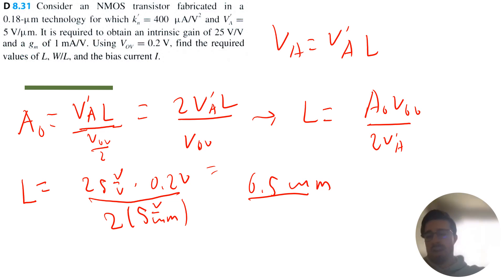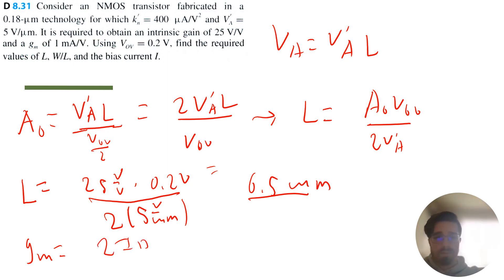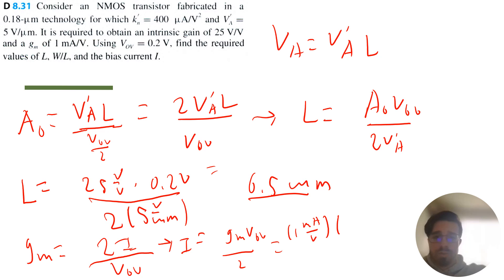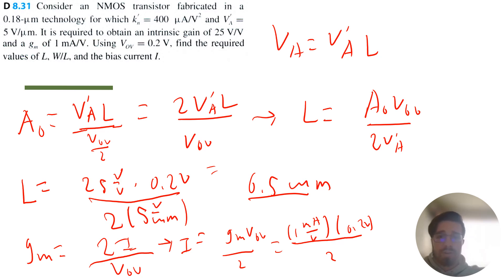Now we know gm equals 1 milliamp per volt, and we can also write gm equals 2 times the bias current I divided by V overdrive. Solving for I gives I equals gm times V overdrive divided by 2, which is 1 milliamp per volt times 0.2 volts divided by 2. So the drain current, or bias current, I equals 0.1 milliamps.